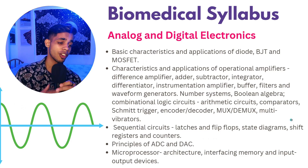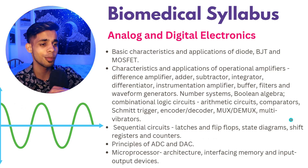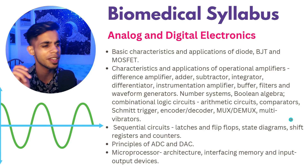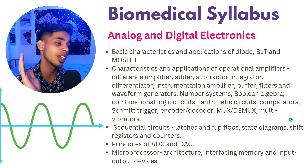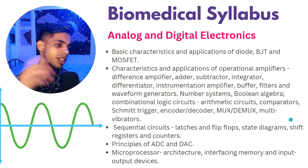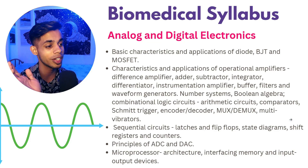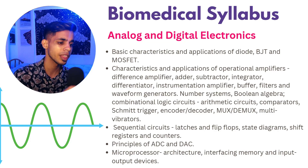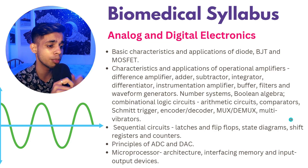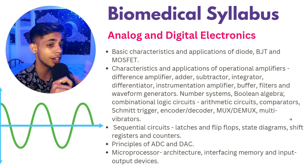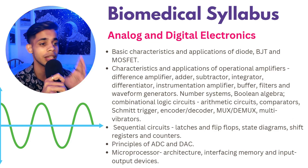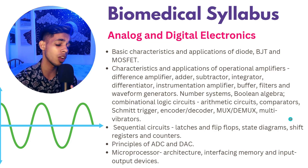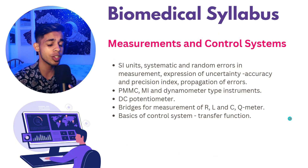Analog and digital electronics covers diodes, BJTs, MOSFETs, and the characteristics and applications of operational amplifiers — including differential amplifiers, adder, subtractor, integrator, differentiator, instrumentation amplifier, and buffer. It also covers principles of ADC and DAC, microprocessor architecture, interfacing, memory, and input/output devices — topics similar to microcontrollers and microprocessors from your undergraduate curriculum.